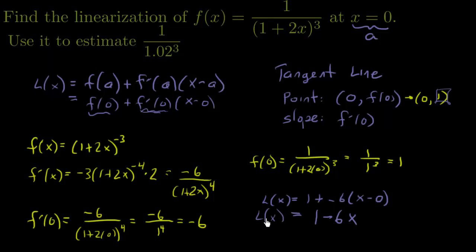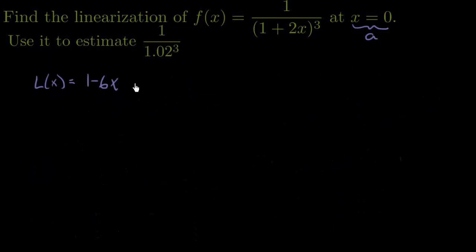Now we need to use it to find this. Okay, so I just rewrote our linearization up here. Now I need to figure out what does x have to be so that I get this over here. Now notice that the ones match, so basically I just need to figure out what does x have to be in here to give me 1.02.